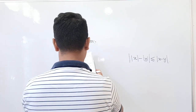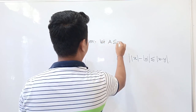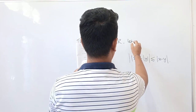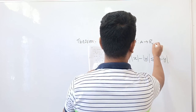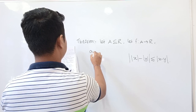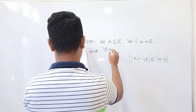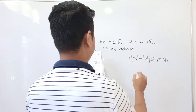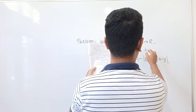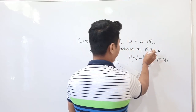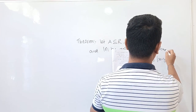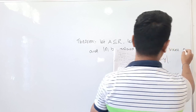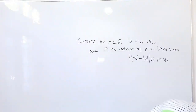Let A be a subset of ℝ, and let f from A to ℝ be a function — that is, a real-valued function. And mod of f is defined by: mod f into x equals mod of f of x, for all x belonging to A.